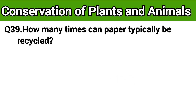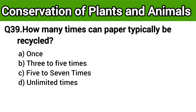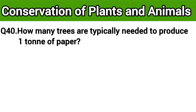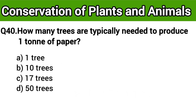Question number 39: How many times can paper typically be recycled? The right answer is option C: five to seven times. Question number 40: How many trees are typically needed to produce one ton of paper? The right answer is option C: 17 trees.